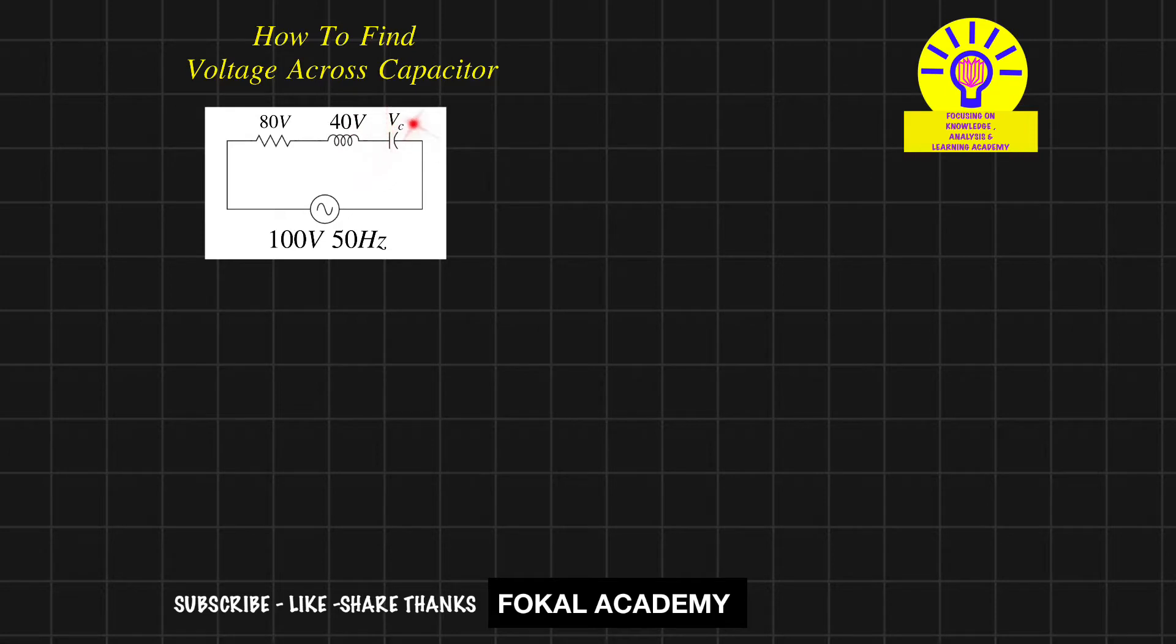In a series RLC circuit, we know that V squared equals VR squared plus (VL minus VC) squared. This can also be written as V squared equals VR squared plus (VC minus VL) squared.